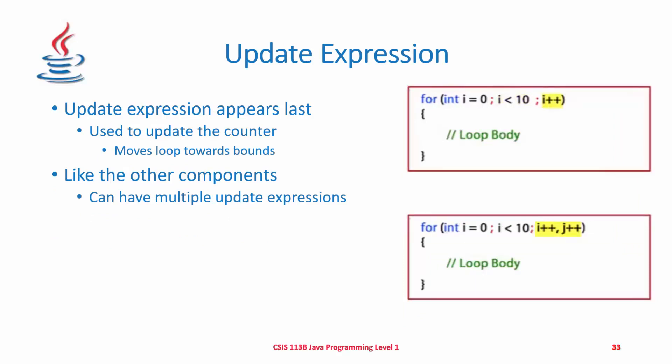The update expression appears last, after the semicolon following the boolean test. It's used to update the counter and move the loop towards its bounds. Like the other components, it can have multiple update expressions — for example, incrementing both i and j. Note that a variable being updated doesn't necessarily have to be in the initialization expression; sometimes it's initialized before the for loop begins.